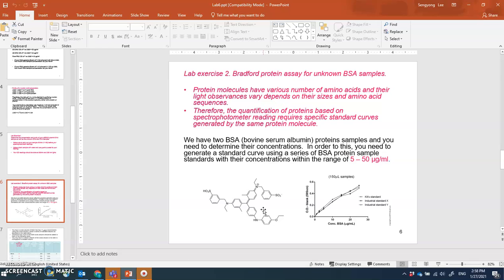Coomassie blue has very good absorbance and a linear relationship between the absorbance and protein concentration in the range of 5 to 50 micrograms per milliliter.